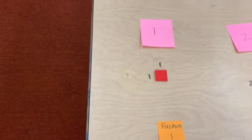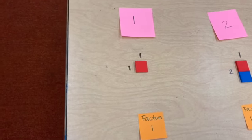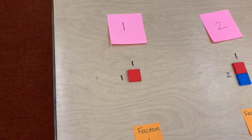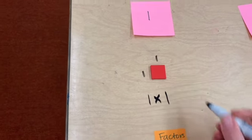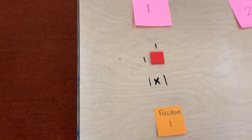So let's start up here with number 1. Here we made a rectangle that is one tile big and there's only one rectangle that we can make. Its dimensions are 1 by 1, so its factors are just 1.